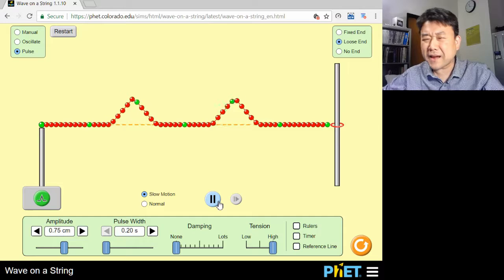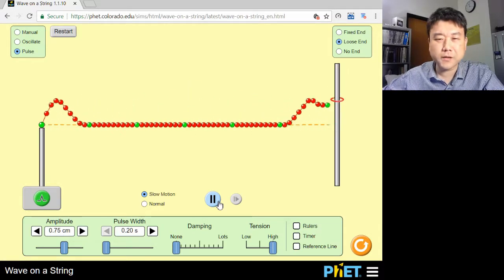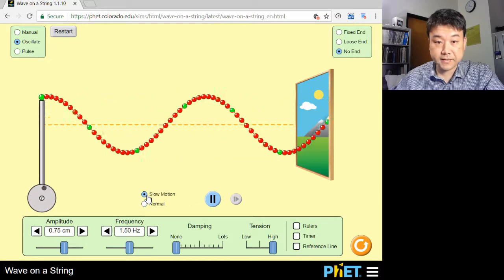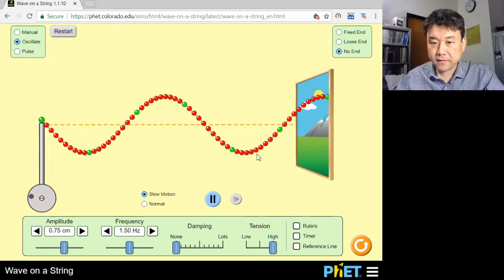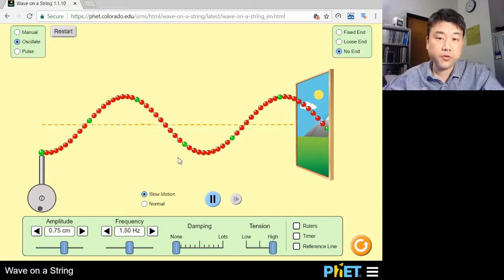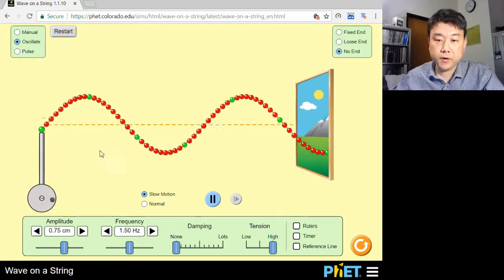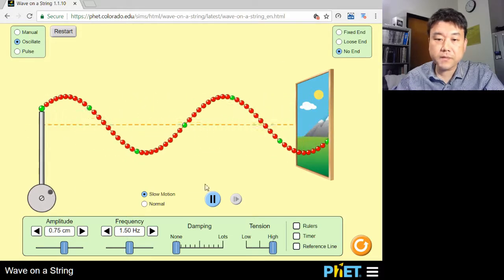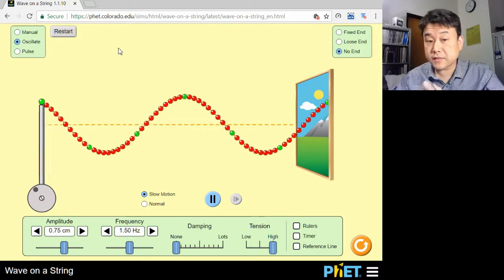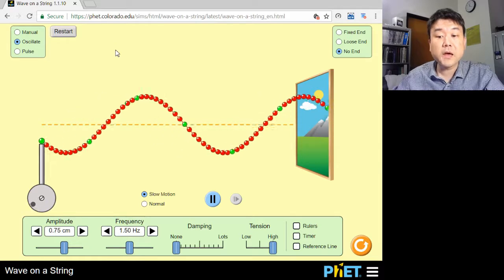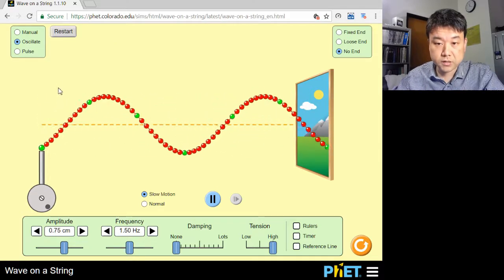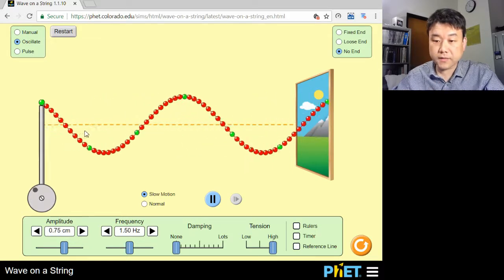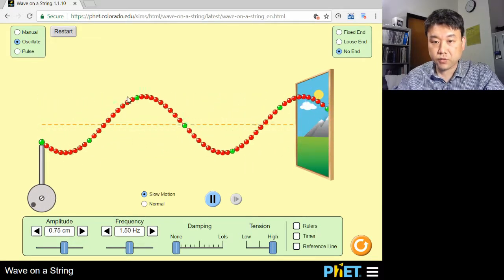But we are not going to get a standing wave by overlapping two pulses. We need periodic waves, like this. I opened up the end so that we get a simple traveling wave, traveling from left to right. When we talk about waves, this is the mental image I want you to have. This is what we mean when we say that waves are oscillations in time and space, or that waves are disturbances that travel over space.